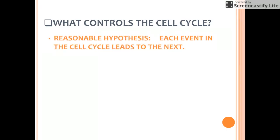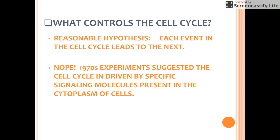So what controls the cell cycle? There was a reasonable hypothesis back in the day that each event in the cell cycle leads to the next. In the early 1970s, a variety of experiments suggested an alternative hypothesis: the cell cycle is driven by specific signaling molecules present in the cytoplasm. These experiments demonstrated that the events of the cell cycle are directed by a cell cycle control system — a cyclically operating set of molecules that both triggers and coordinates key events in the cell cycle.